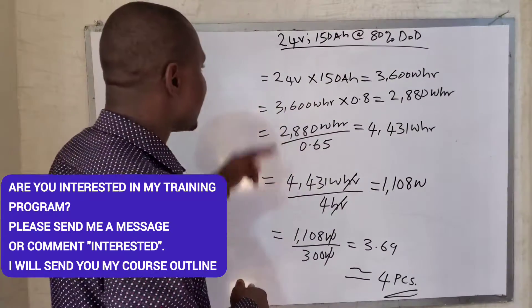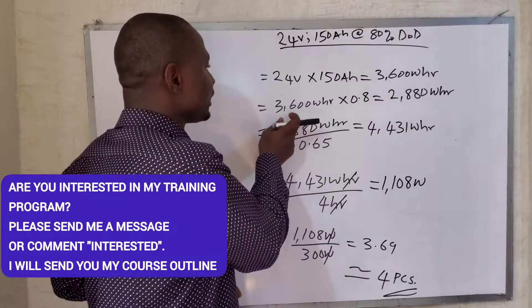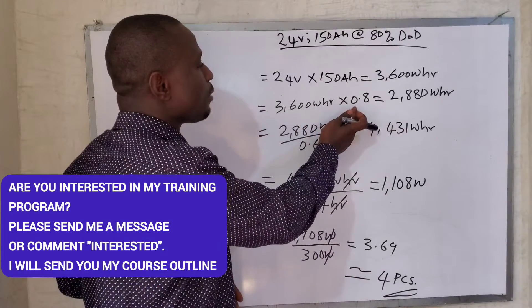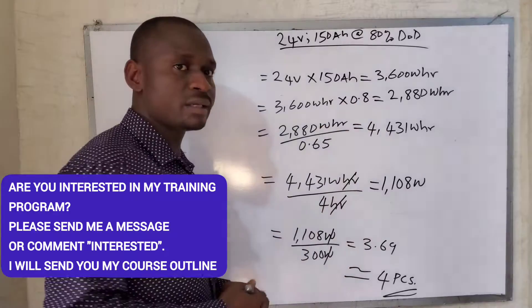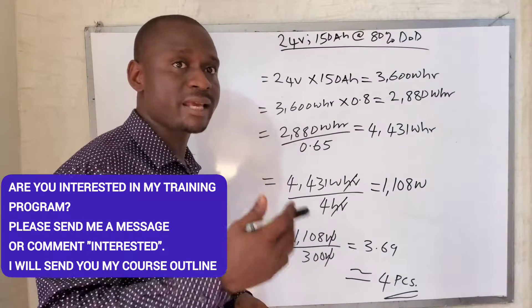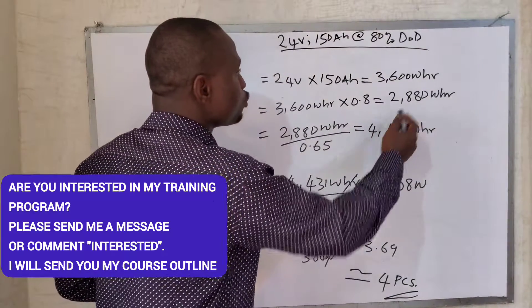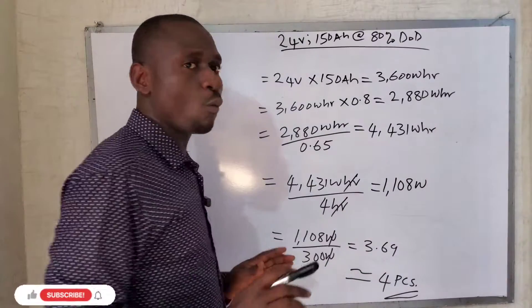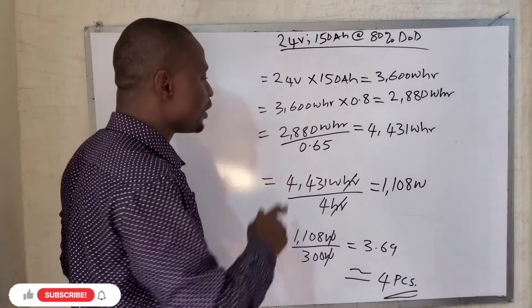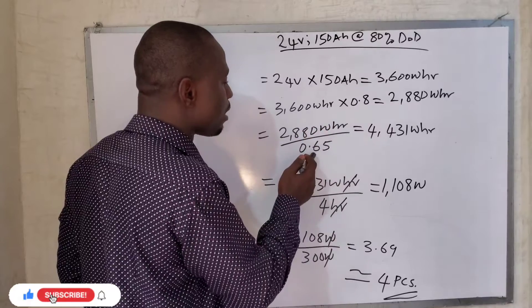Now at 80% DoD, it will be 3,600 watt-hours multiplied by 0.8 (that's 80 divided by 100). This will give you 2,880 watt-hours. Now in the next step, you divide this 2,880 watt-hours by the performance ratio of the solar panels.